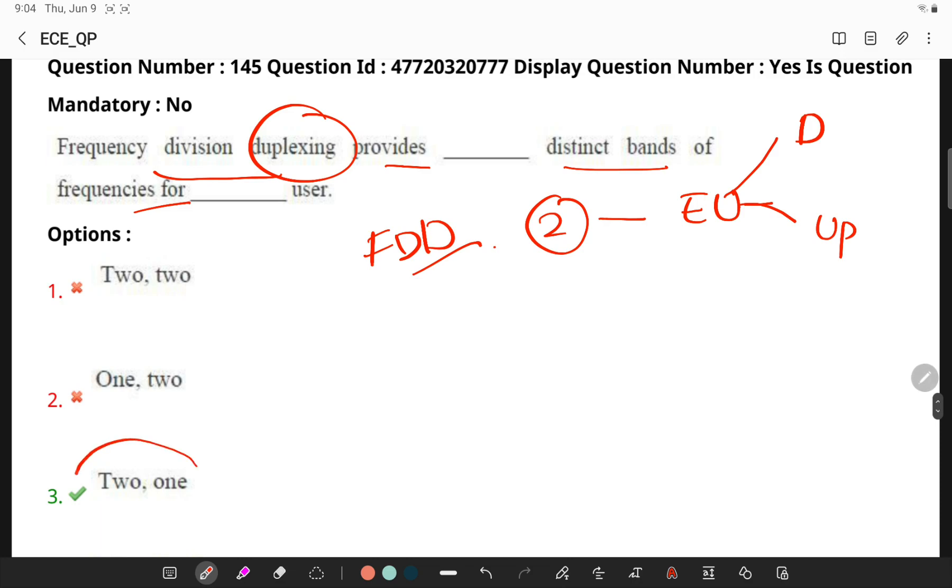So you will have only one user. You have a reverse channel and a forward channel and a frequency separation. So frequency division duplexing will be having two separate bands of frequencies, one for downlink and other for uplink.